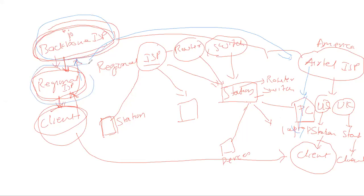So in architecture, the main architecture works in this way. We have three things: Backbone ISP, Regional ISP, and Client.